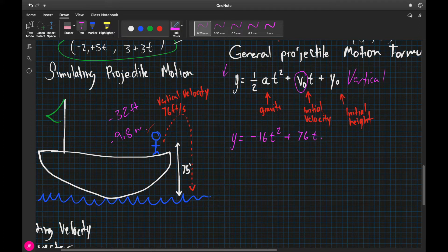And then we're going to go ahead and add in our initial height, which is going to be, in this case, 75 feet. So 75. And so here we have an equation that is going to model the vertical position of this flare.